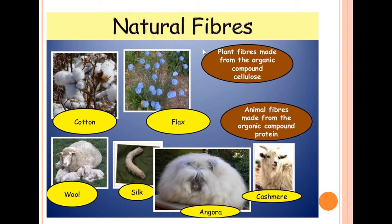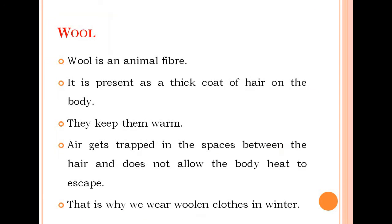In this slide you can see various examples of natural fibers. Plant fibers like cotton and flax are made from the organic compound cellulose. Animal fibers such as wool, silk, angora, and cashmere are made from the organic compound protein.